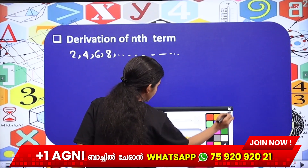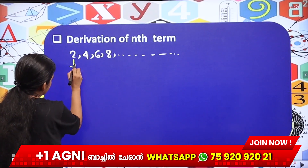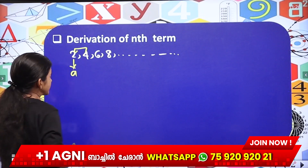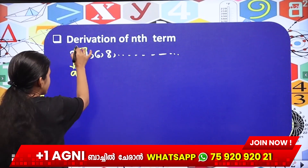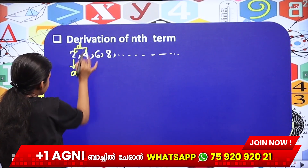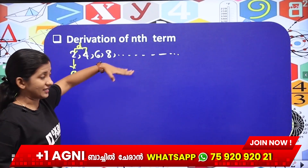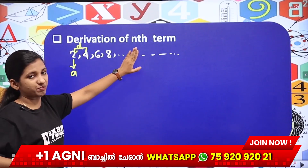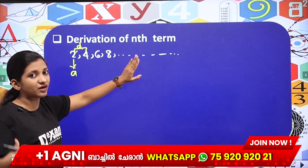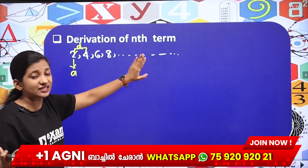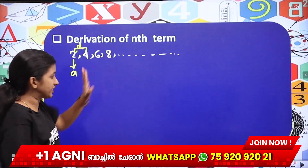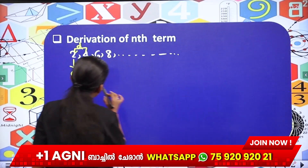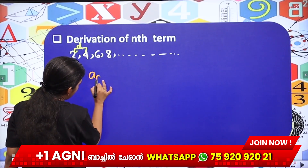We need an arithmetic progression. So first, the first term is 'a'. Then the common difference is 'd'. The terms are a, a+d, a+2d, a+3d, a+4d — and so on. We can derive the arithmetic progression equation.